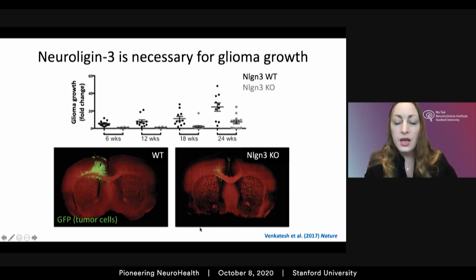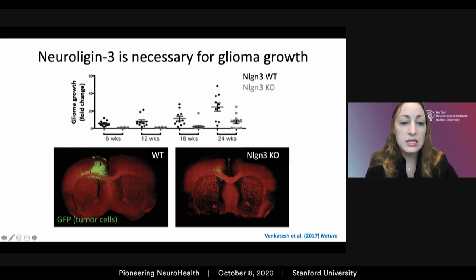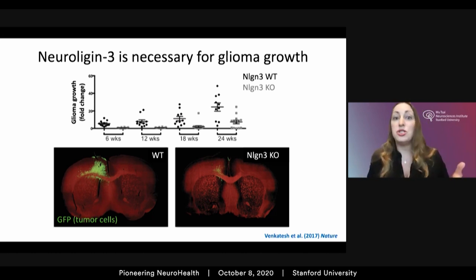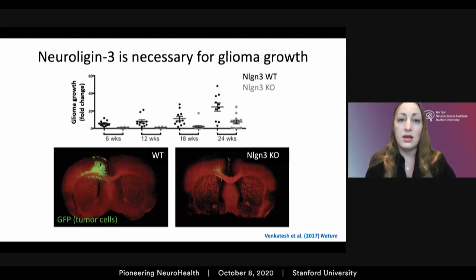We wanted to understand the relative contribution of Neuroligin-3 to glioma growth. We xenografted patient-derived gliomas into either Neuroligin-3 wild-type or Neuroligin-3 knockout brains. What we found was really unexpected: rather than simply slowing growth, gliomas failed to progress in the absence of microenvironmental Neuroligin-3. Here are green glioma cells growing in a wild-type brain, and here in a Neuroligin-3 knockout brain six months after xenografting — the cells persist but they don't expand, as monitored by in vivo bioluminescent imaging.